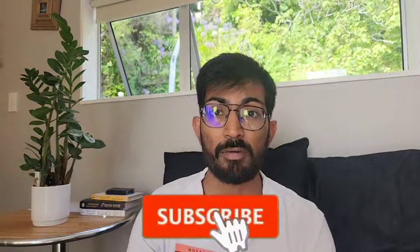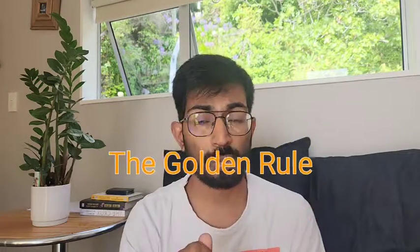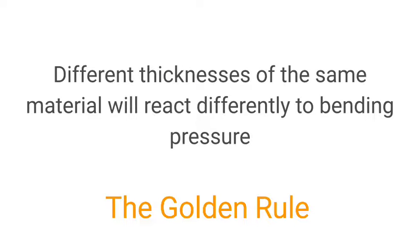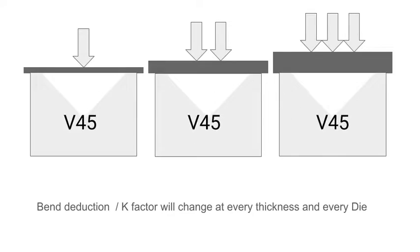Welcome to my video. Let's dive into how to get a perfect fold for your sheet metal. Remember this like a golden rule: different thicknesses of the same material will behave differently under different pressure provided by the press brake. For example, if we are folding 2mm, 3mm, and 6mm steel in the same V — say V45 — all three materials, even though they are all mild steel, will react differently because they all require different pressure to get folded and will all have a different k-factor and bend deduction.